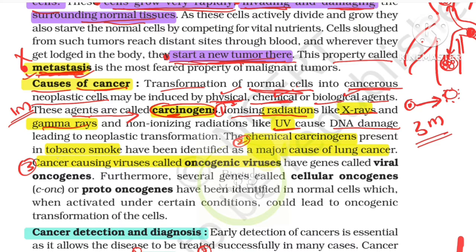Chemical carcinogens — for example, tobacco smoke is the main cause of lung cancer. Biological agents include certain viruses that cause cancer, called oncogenic viruses. These are the three types of carcinogens — very important for 3-mark questions.